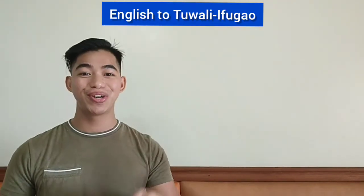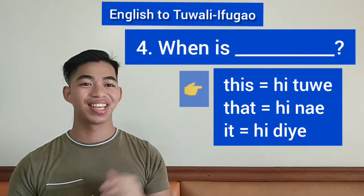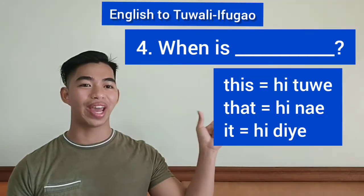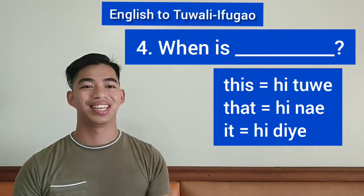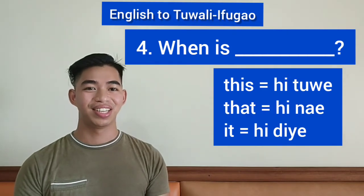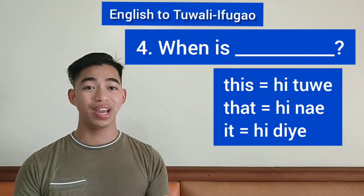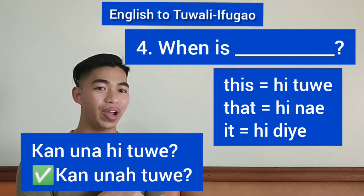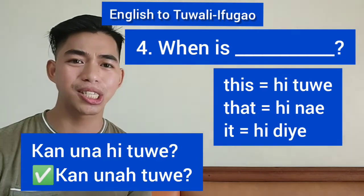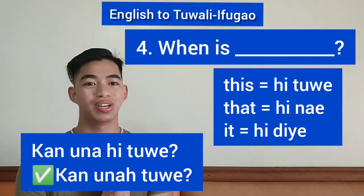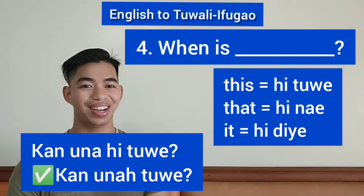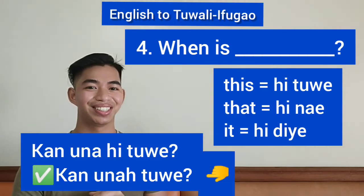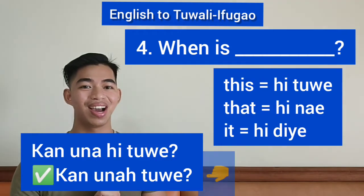Question number four: When is this / that / it? 'This' is 'hituwe', 'that' is 'hinahe' or 'hidiye'. To say 'when is this' or 'when's this' in Ifugao we say 'kan una hi due', contracting to 'an una tue'. Repeat after me: an una tue.